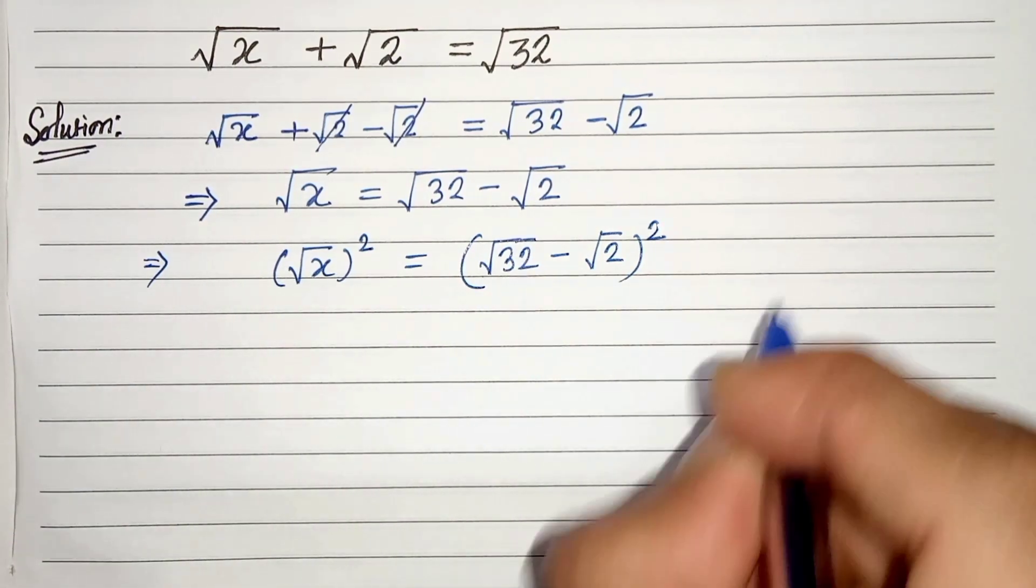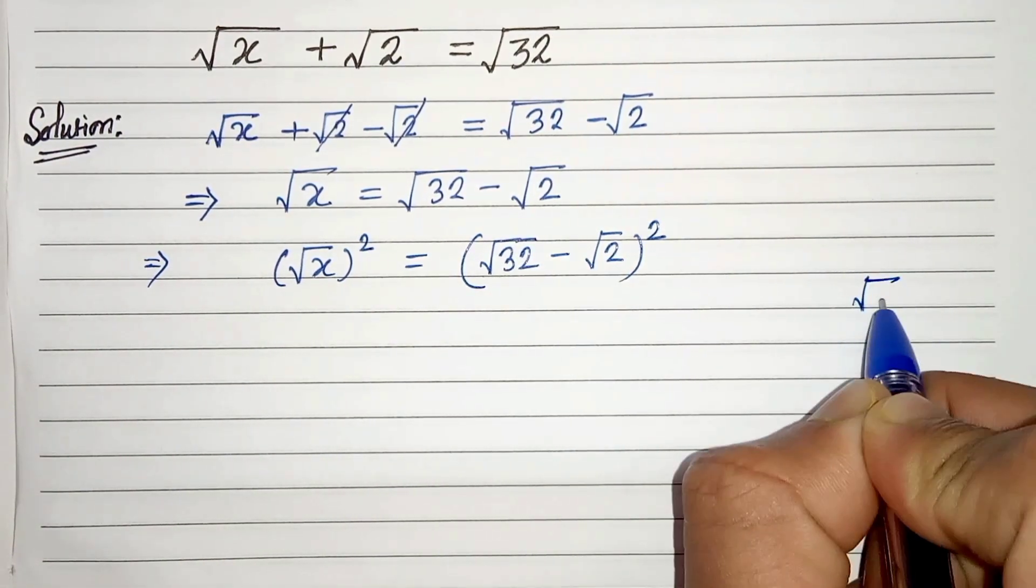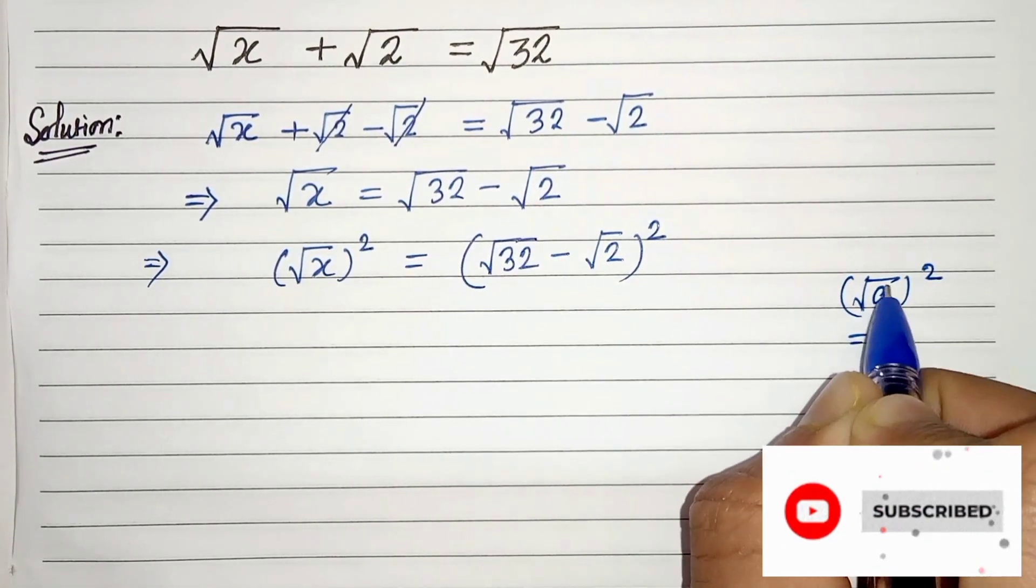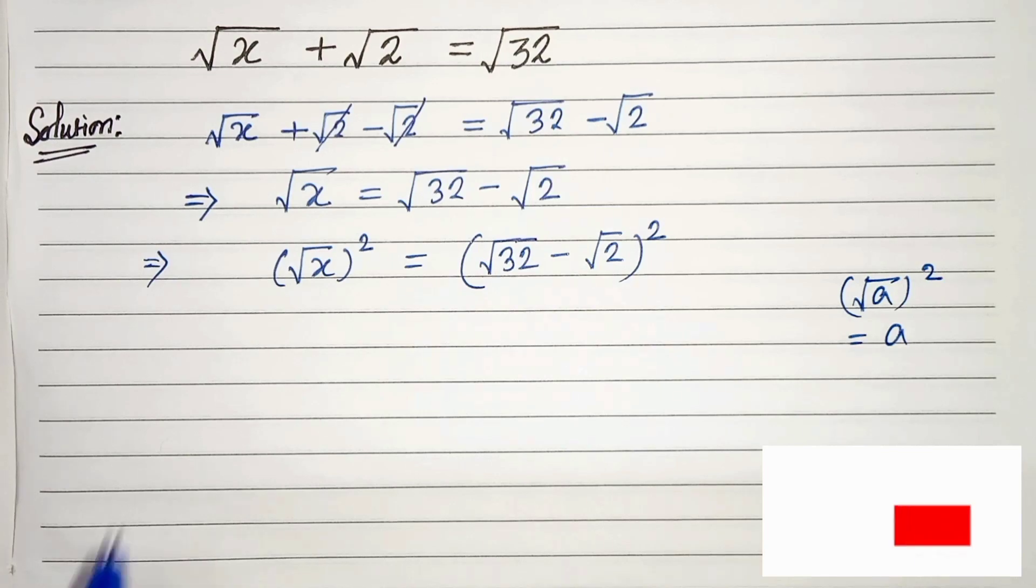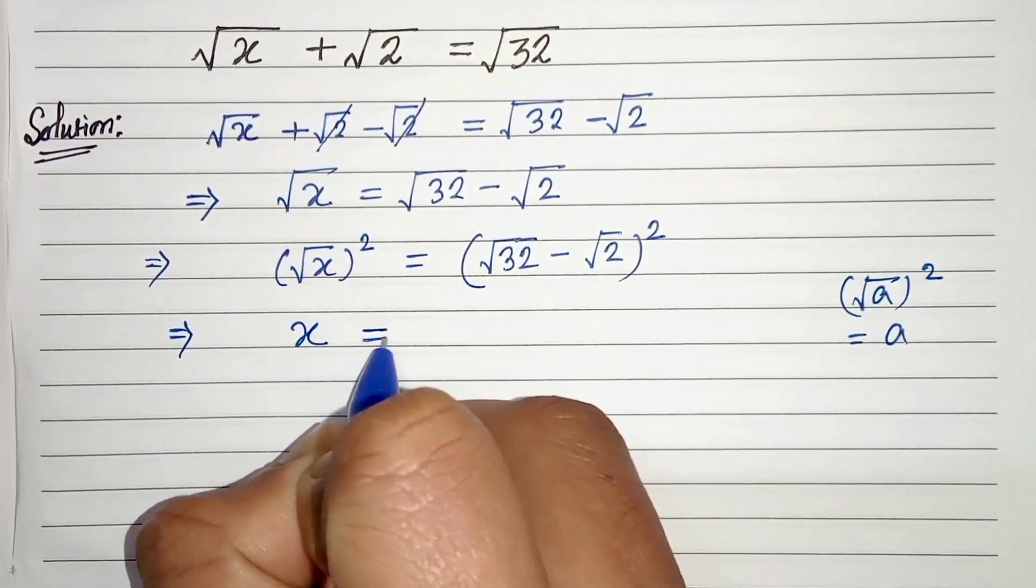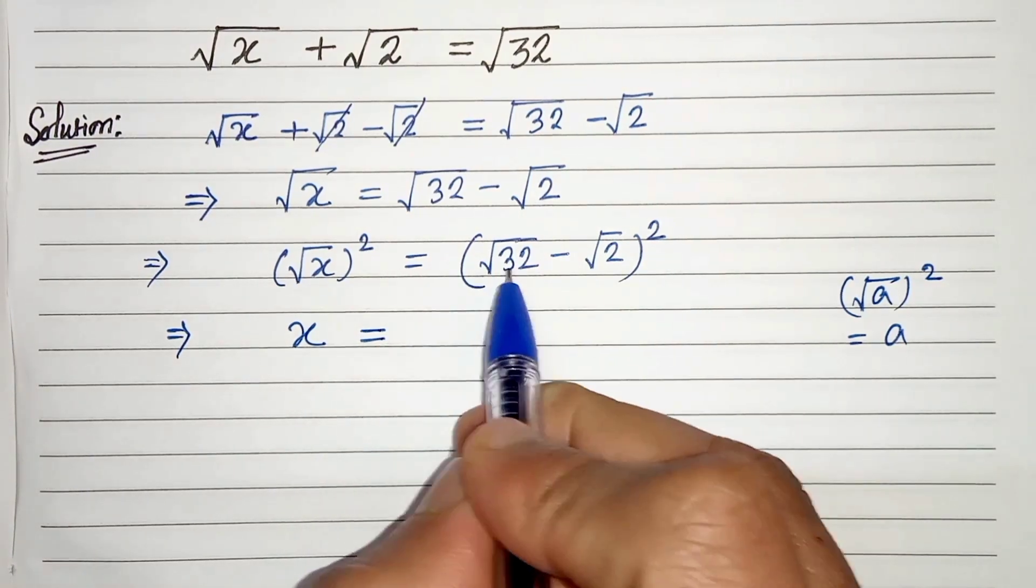We know that (√a)² can be written as a since root and square gets cancelled. So this will be x, and this is (a - b)² formula.